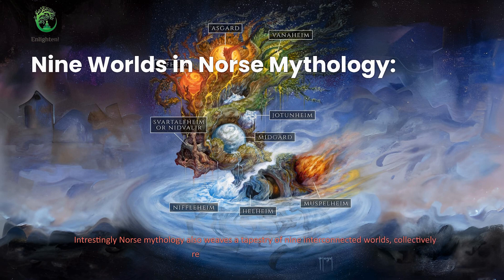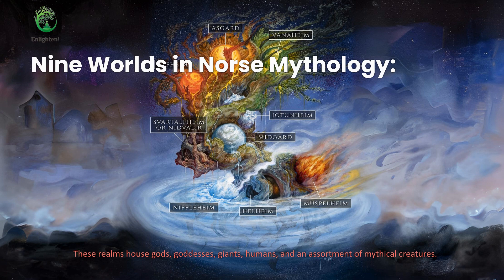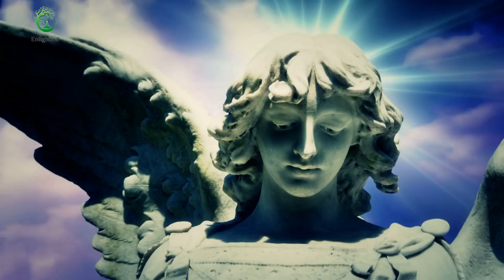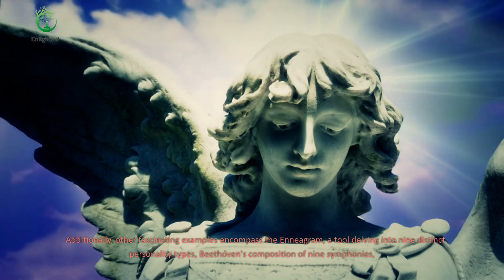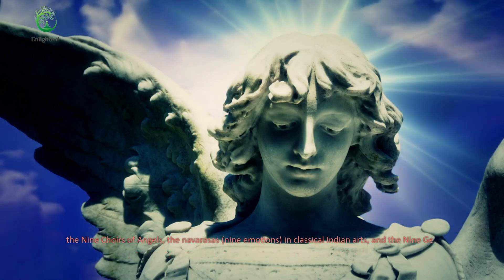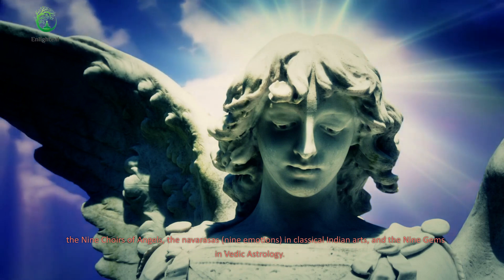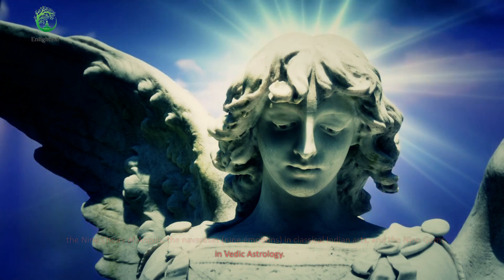Interestingly, Norse mythology also weaves a tapestry of nine interconnected worlds, collectively referred to as the Nine Worlds. These realms house gods, goddesses, giants, humans, and an assortment of mythical creatures. Additionally, other fascinating examples encompass the Enneagram, a tool delving into nine distinct personality types, Beethoven's composition of nine symphonies, the nine choirs of angels, the Navarasas, nine emotions in classical Indian arts, and the nine gems in Vedic astrology.